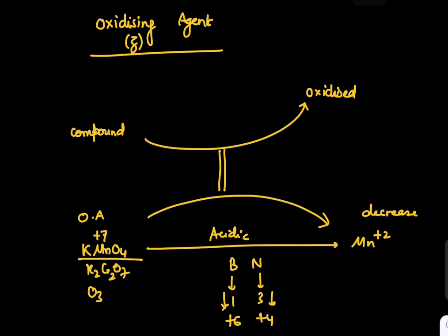K2Cr2O7 in acidic medium shows change from +6 to +3, hence the drop is 3. But net drop for Cr2 is 6.